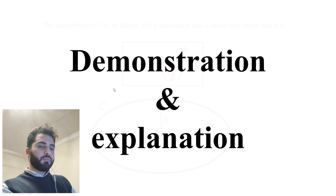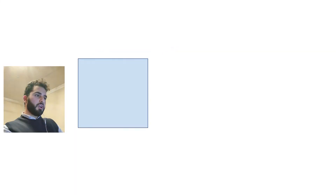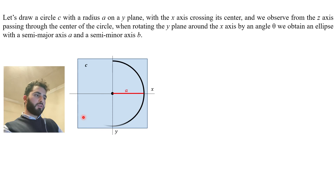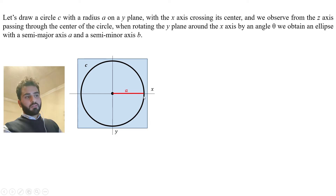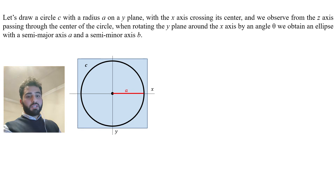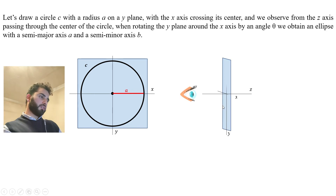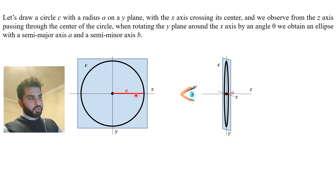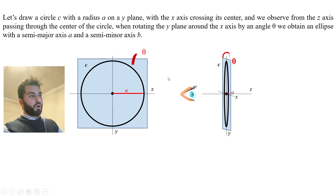So let's start the demonstration and explanation. First, we will take a two-dimensional plane on which we draw a circle — call it small c — with radius a. What I would like is for us to observe this circle through the z-axis, where the z-axis crosses the center of the circle. So this is us, the observer, looking at the circle through a z-axis crossing its center.